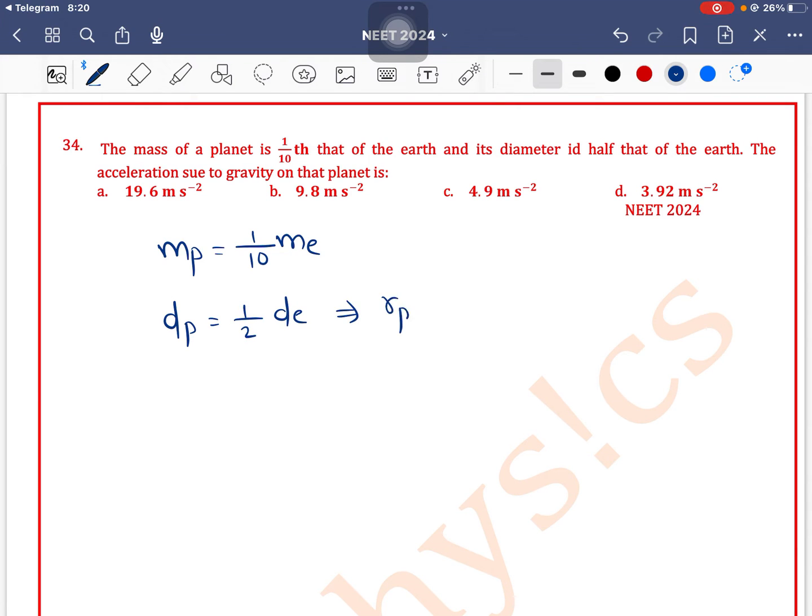So we can write that the radius of the planet is half of the radius of Earth. The acceleration due to gravity on that planet is - what is the formula for acceleration due to gravity? g is equal to GM/r².